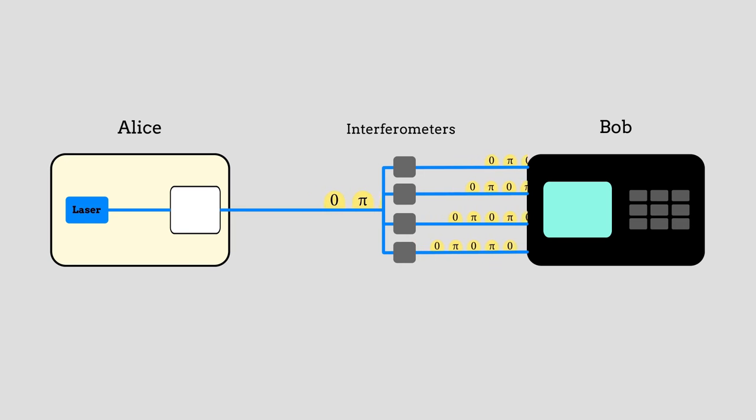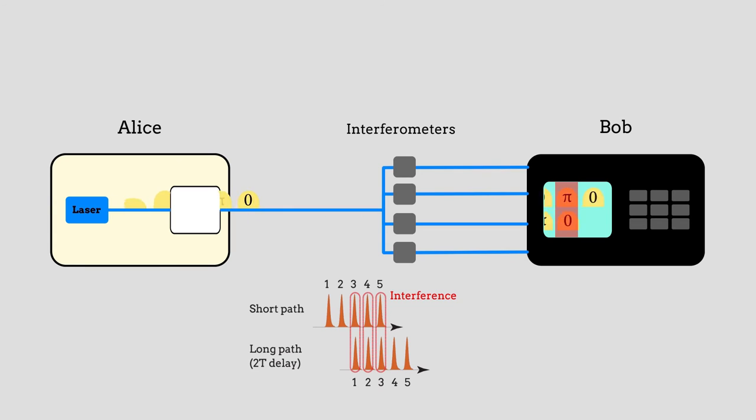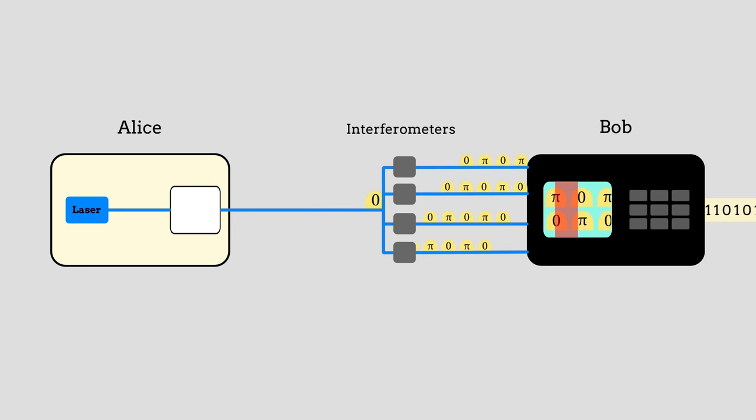The next step requires Bob to measure the interference between the original encrypted train and one of the new delay trains selected at random. In fact, because the pulse train is very weak, only one interferometer, which is randomly chosen by an optical splitter, allows for the interference to be detected.